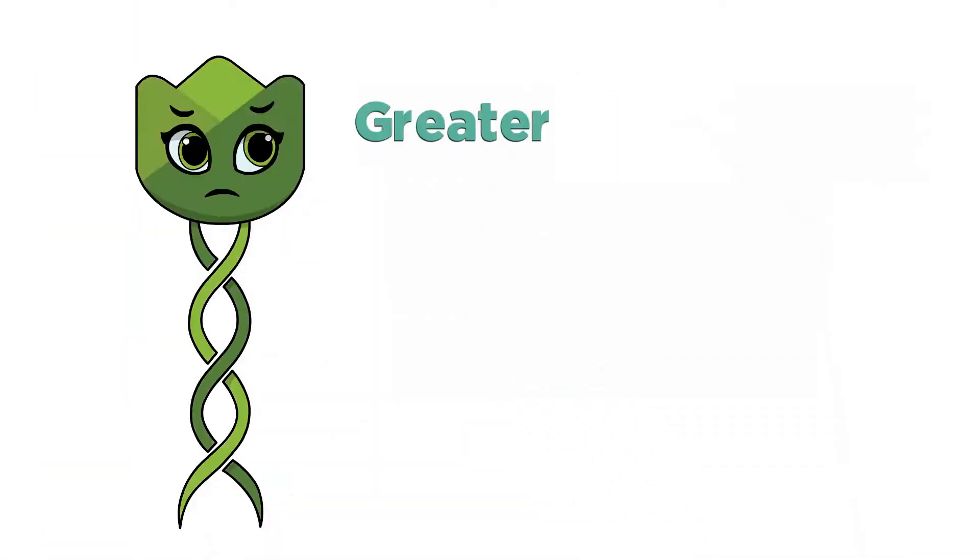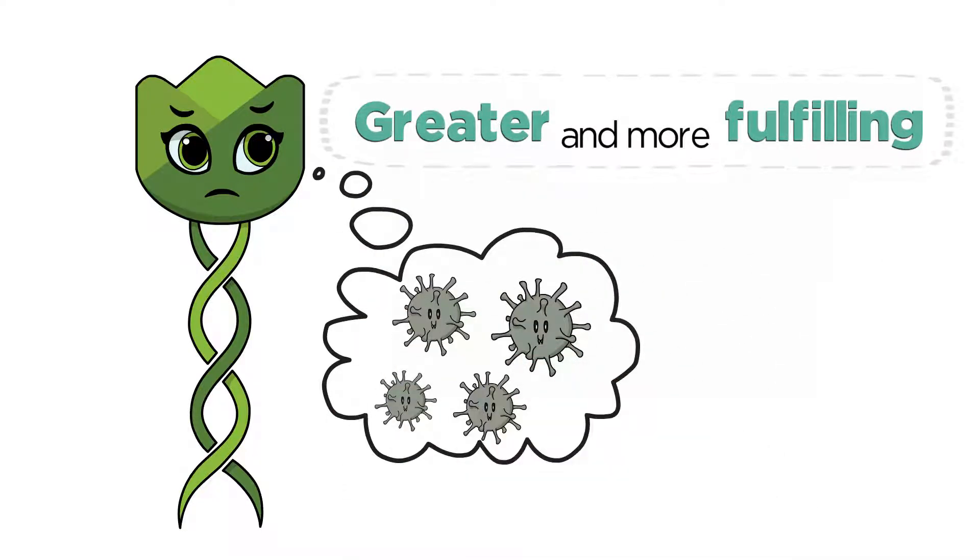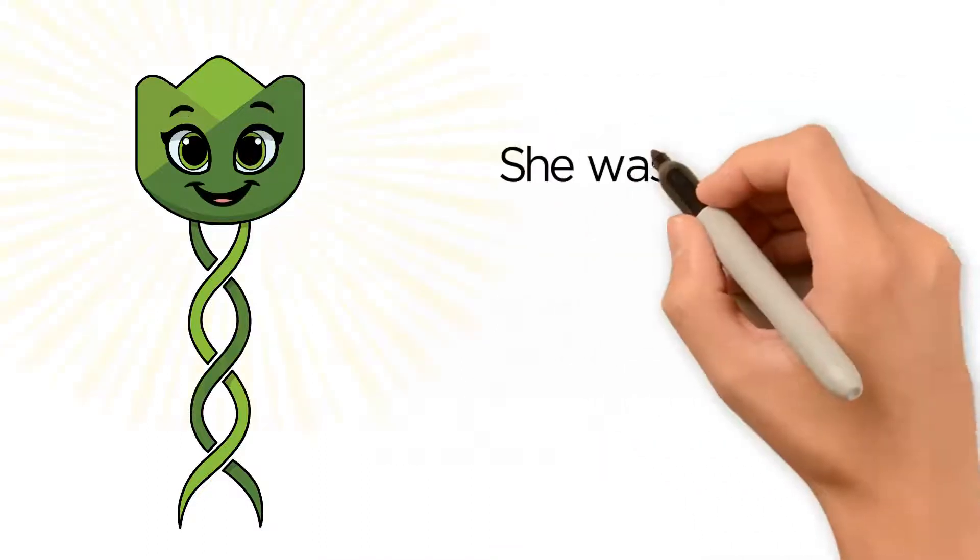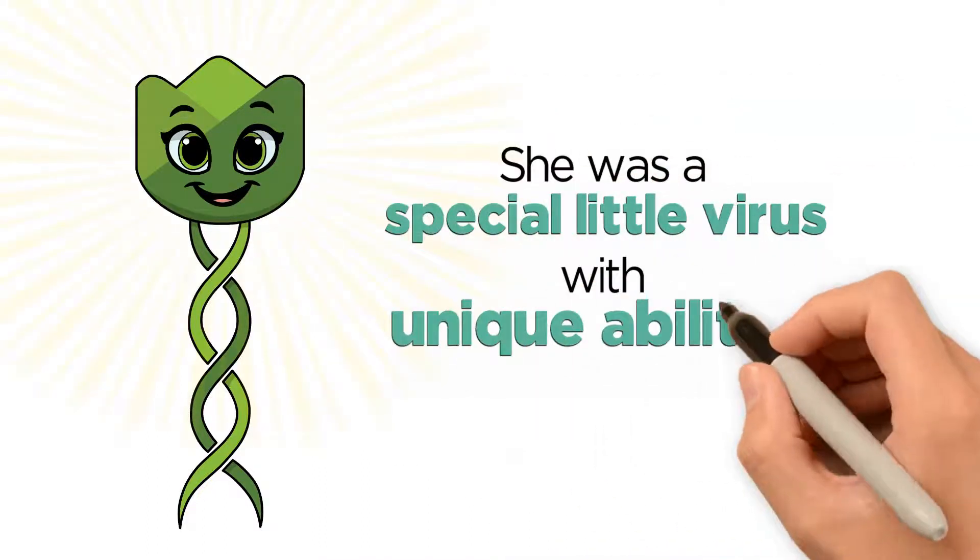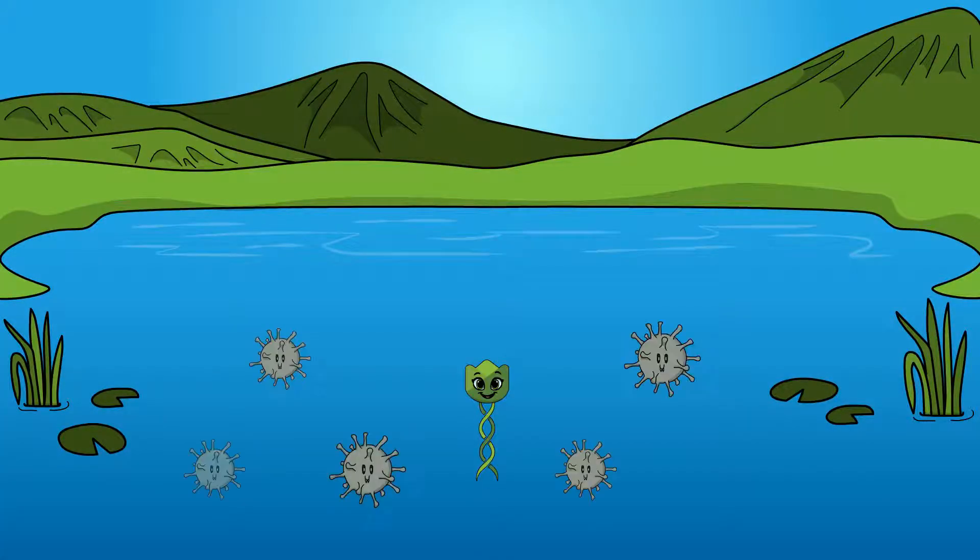Taylor yearned to be a part of something greater and more fulfilling. She yearned to be more than just another of the billion microbes that inhabit the same pond. But what Taylor did not know was that she was a special little virus with unique abilities. She was very different from all the other microbes in the pond.